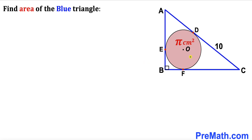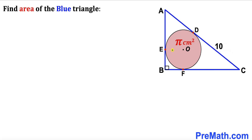Welcome to pre-math. In this video we have a pink circle with center O fully inscribed in a right triangle ABC, such that the area of this circle is π centimeter square, segment CD is 10 centimeters, and points D, E, and F are points of tangency. Our task is to calculate the area of this blue triangle ABC.